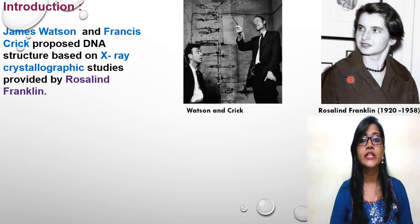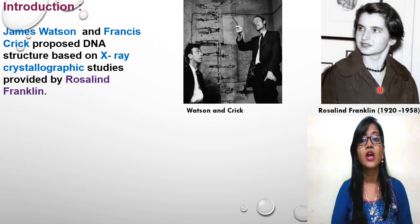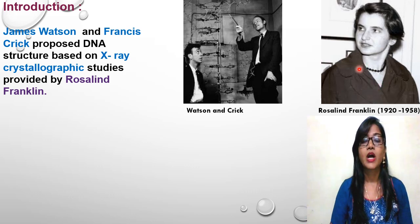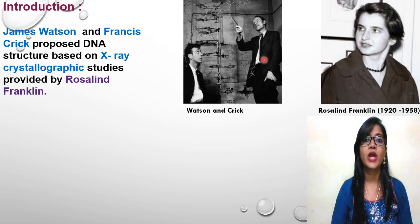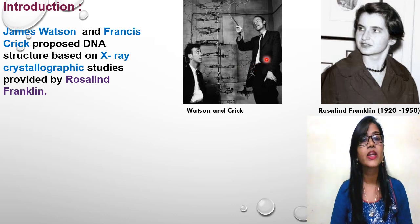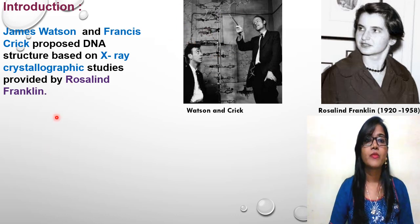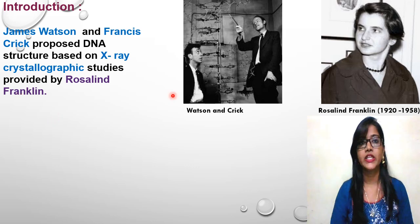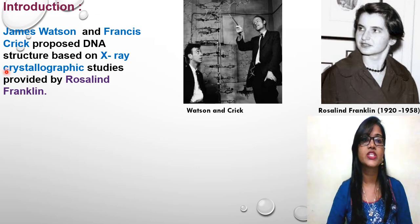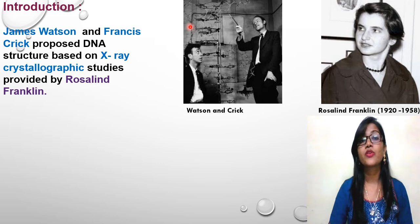She is actually the main discoverer of the DNA structure. She gave the X-ray crystallographic image of the DNA. By studying her paperwork after she died, Nobel Prize winners Watson and Crick used her data and later proposed the twisted ladder structure of the DNA. This is all about James Watson, Francis Crick, and Rosalind Franklin.